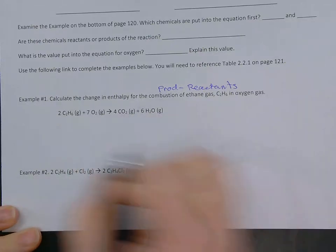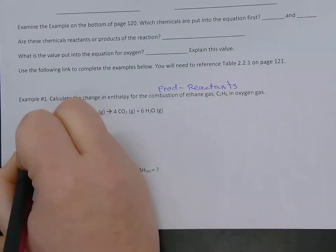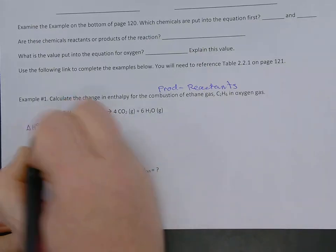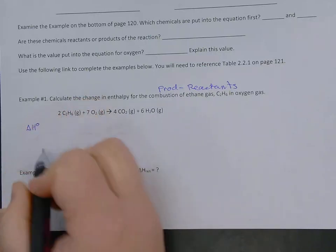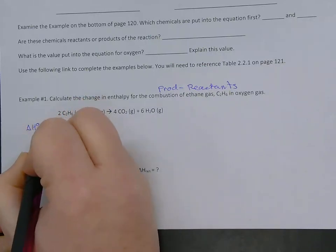So in this one, our first product is carbon dioxide. So our delta H, we use that little knot symbol to show the standard enthalpy of reaction, is equal to...